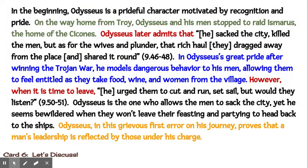Now let's look at the revised version. Read the example on the slide silently as I read it aloud. Note that the lead-ins that embed the evidence into the writer's own sentences are red, the added context is green, the commentary is blue, and the conclusion sentence is orange.